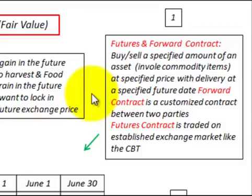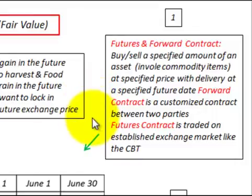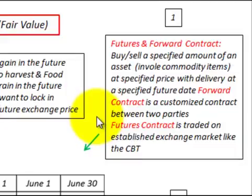The forward contract is a customized contract between two parties, whereas the futures contract is a contract that's traded on an established exchange, a market like the Chicago Board of Trade.